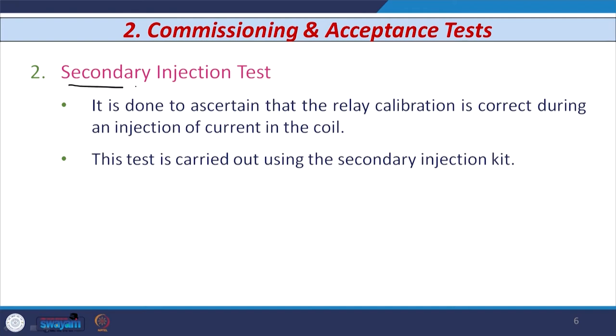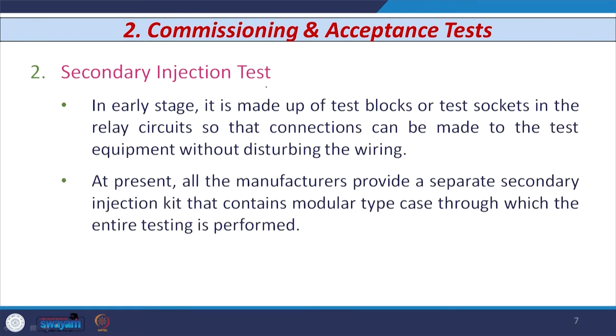The second type of test is known as the secondary injection test. This test is carried out to ensure that the relay calibration is correct during the injection of current into the current coil. This test is carried out using a device known as the secondary injection test kit. In early stages, manufacturers provided test blocks or test sockets; nowadays, separate secondary injection test kits are available from different manufacturers.